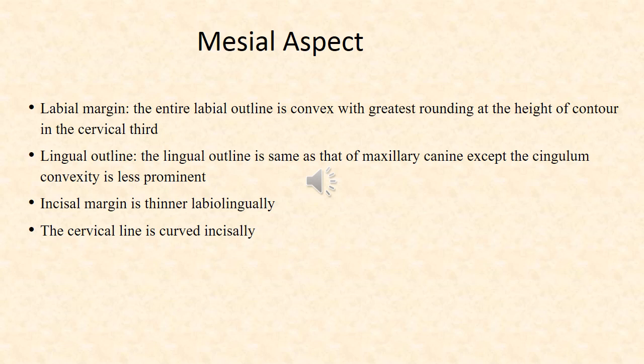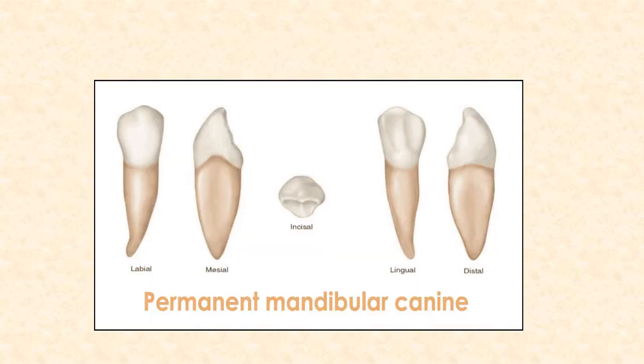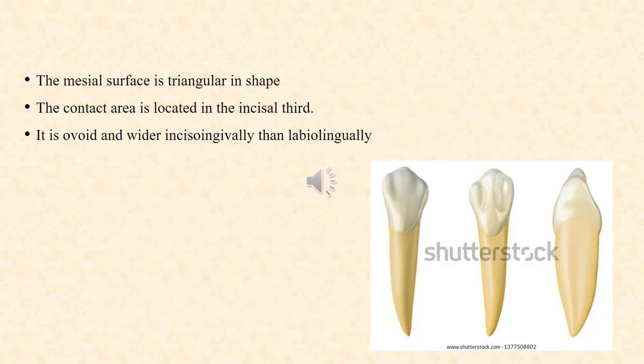Mesial aspect: The entire labial outline is convex with greater curvature at the height of contour in the cervical third. The lingual outline is similar to that of the maxillary canine except the cingulum convexity is less prominent. The incisal margin is thinner labiolingually. The cervical line is curved incisally. The mesial surface is triangular in shape. The contact area on the mesial surface is located in the incisal third and is wide, being wider incisocervically than labiolingually.